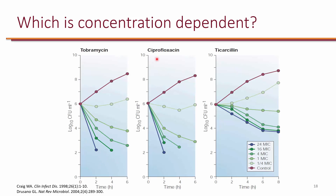Ciprofloxacin showed the same pattern — as concentration increased, more organisms died over time. Compare that to ticarcillin, a beta-lactam: as concentration increased, organisms dropped, but at some point increasing concentration made no difference. Once we reached four times the MIC, we got the maximum amount of killing — 16 or 24 times the MIC made no additional difference. This suggests beta-lactams do not have concentration-dependent killing, whereas tobramycin and ciprofloxacin do.